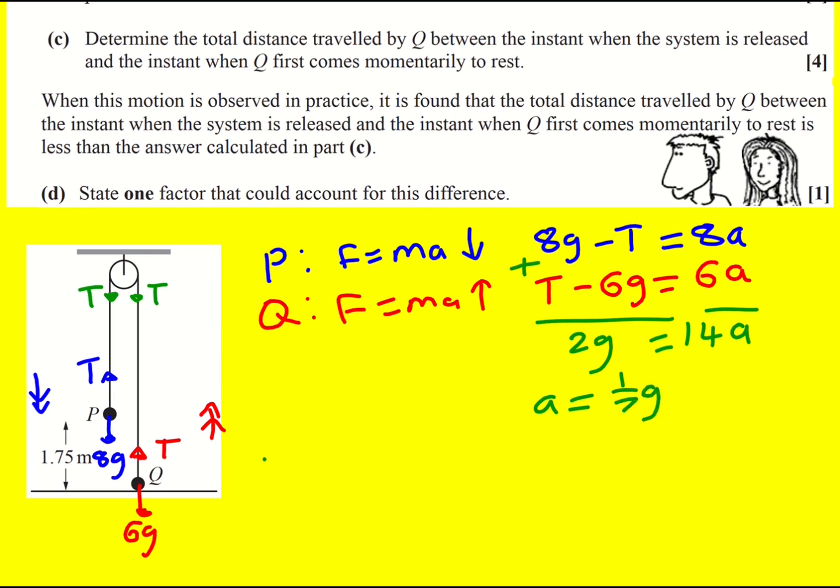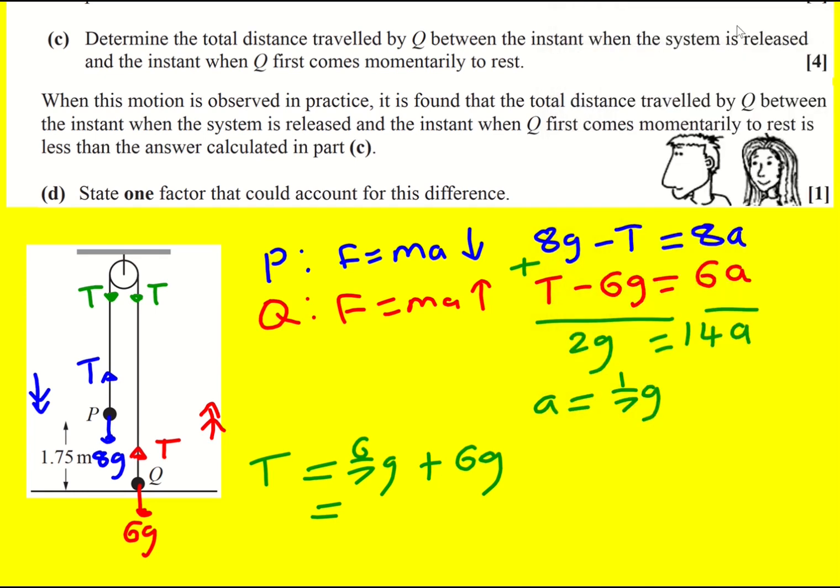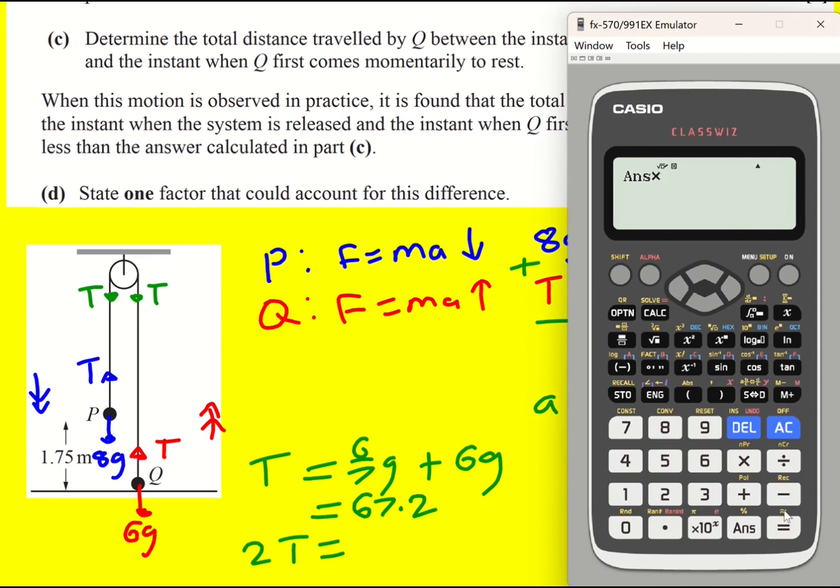Then if I want T, I can just substitute it back in. T is going to be 6 over 7G, because that's 6 times A, plus 6G. And so it's going to be 6 and 6/7ths G, but let's work that out exactly. So 6 divided by 7 plus 6, and then I can times that by 9.8. So 67.2. And therefore, 2T just times it by 2.